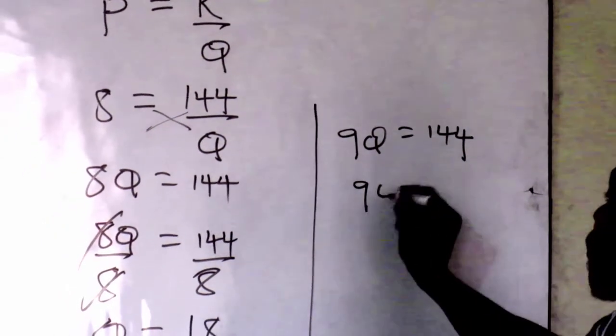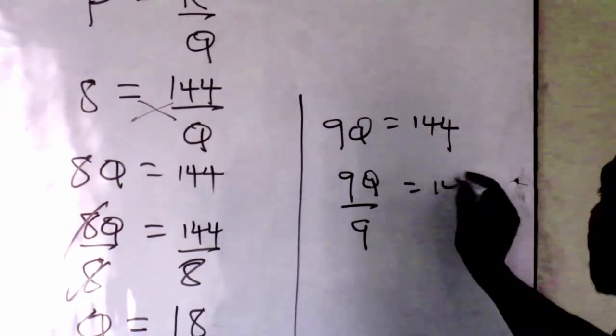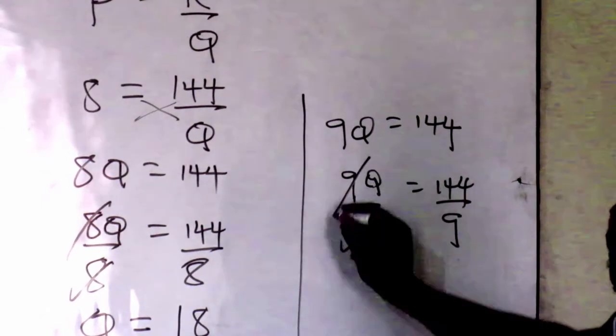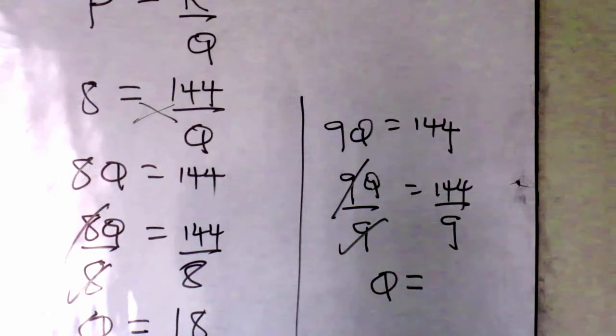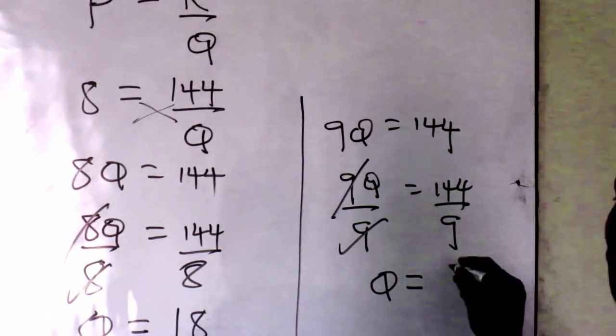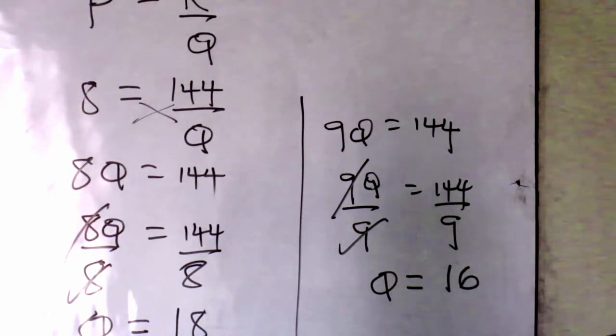9KL equals 144. So if I have 1KL, I just have to divide by what? 9. Now what is KL? When you divide 144 over 9, what do you get? 16. You have 16, right? Good.